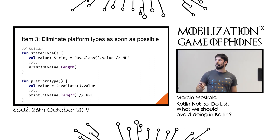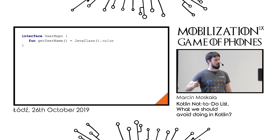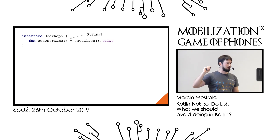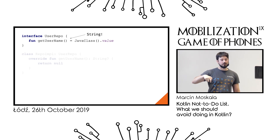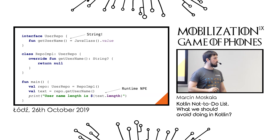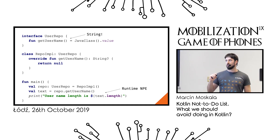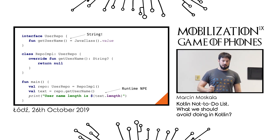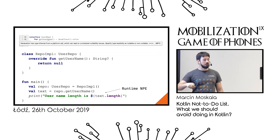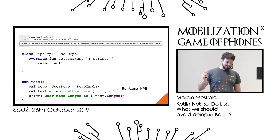Platform types interoperate very badly with our typing system. In an extreme case, if you infer a platform type into a return type of an interface or open method, the declaration side might decide it's nullable while the use side decides it's non-nullable — and BAM, a runtime NullPointerException with no compilation error, null produced and consumed entirely in Kotlin. Kotlin does give a warning if you try to expose a platform type in a public overridable function, but most developers don't care. Please be aware.